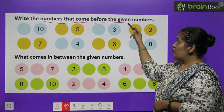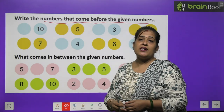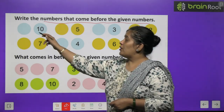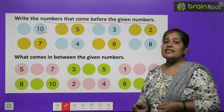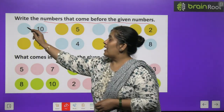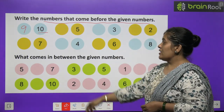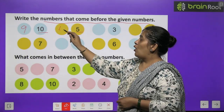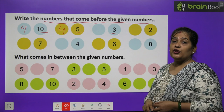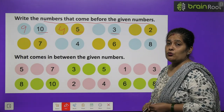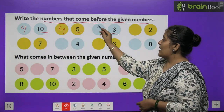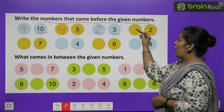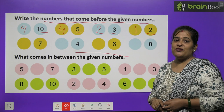Write the number that comes before the given number. Aapko unse pehle kaunse numbers aate hain, woh likhne hain. First number is number 10 — 10 se pehle kya aata hai? Number 9. The next one is number 5 — 5 se pehle kaun sa number aata hai? Number 4. The next number is number 3 — 3 se pehle kya aata hai? Number 2. The next number is number 2 — 2 se pehle kya aata hai? Number 1. Rest of the part, you will do by yourself.